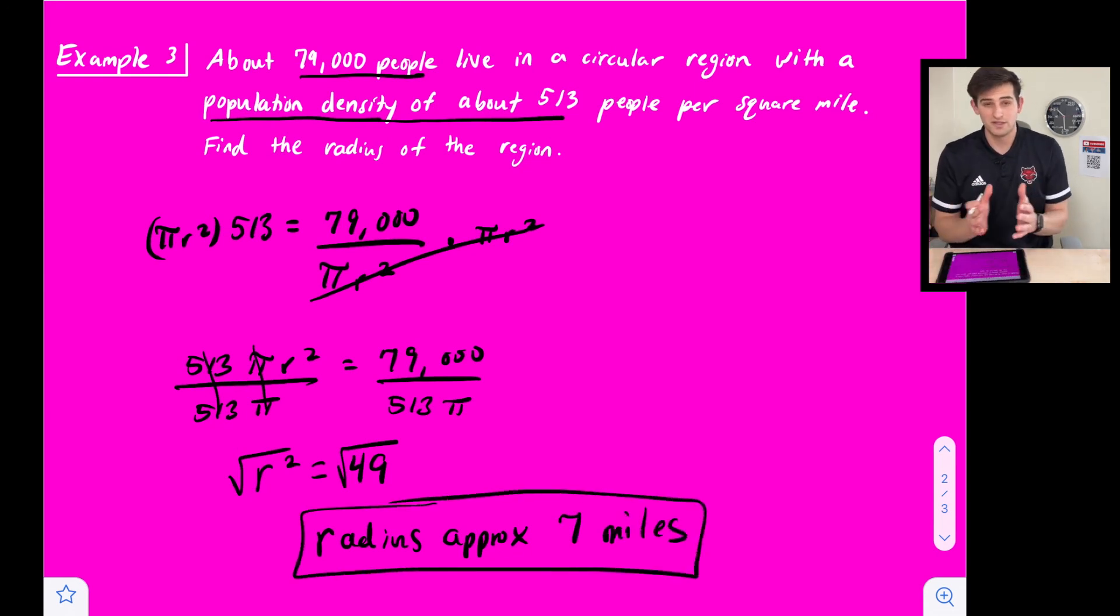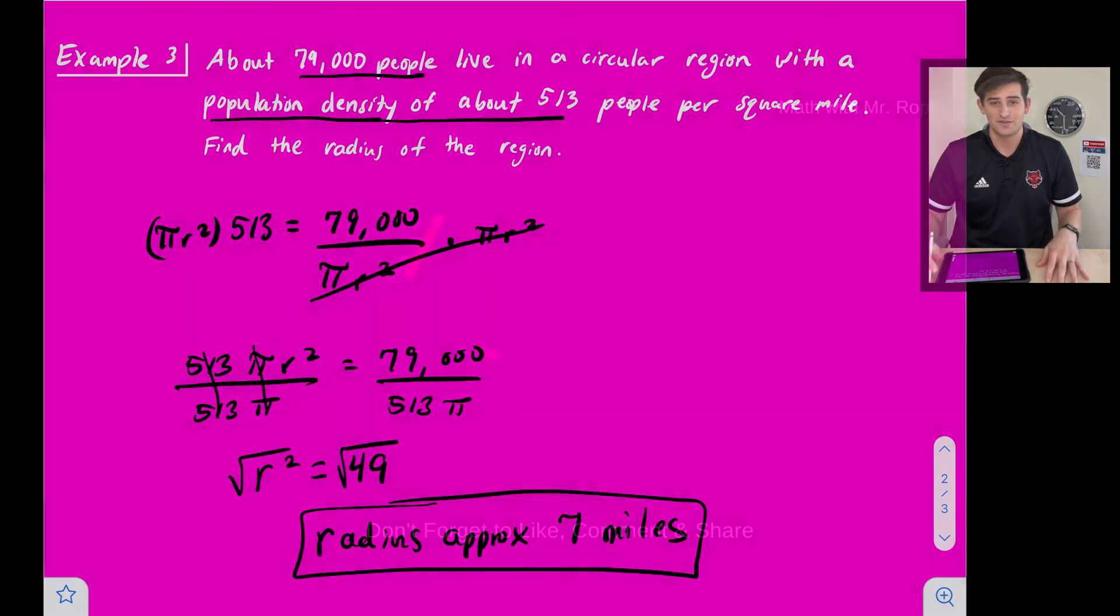So that is our formula for population density and how we can use it to find population density, the number of people that live in a region, or the radius of the region.